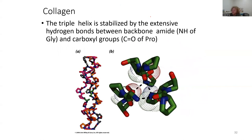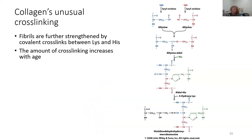Collagen's triple helix is stabilized by extensive hydrogen bonds between backbone amide and carboxyl groups, but we've also got hydrophobic interactions. So stabilization of the triple helix involves hydrophobic interactions plus hydrogen bonds. Compare that to keratin, which is stabilized by hydrophobic interactions and disulfide bonds.